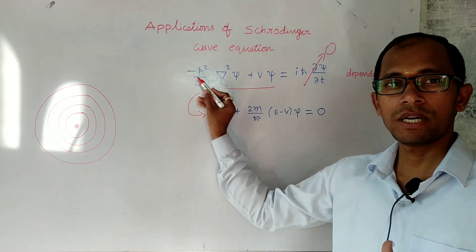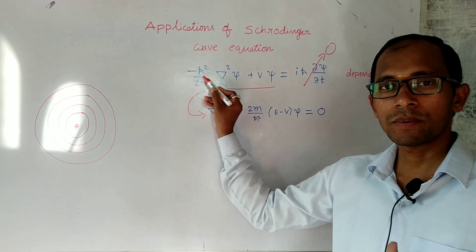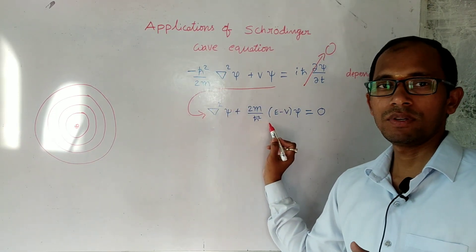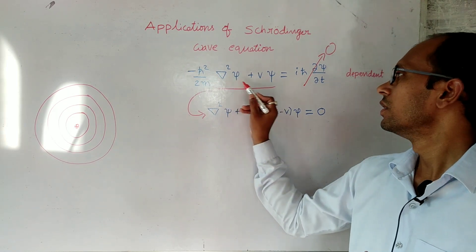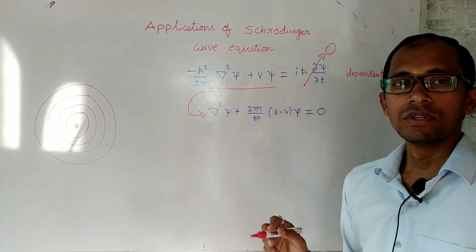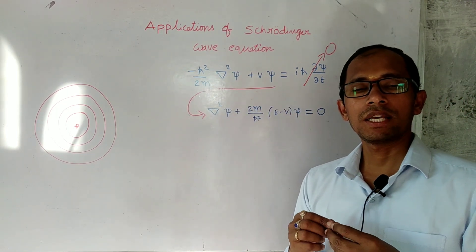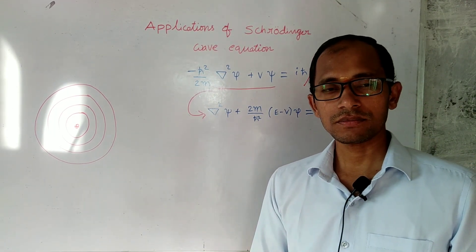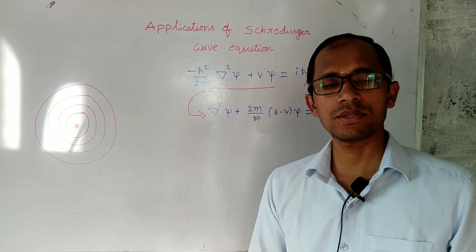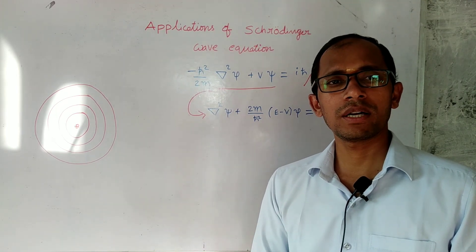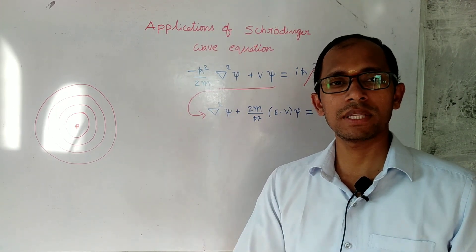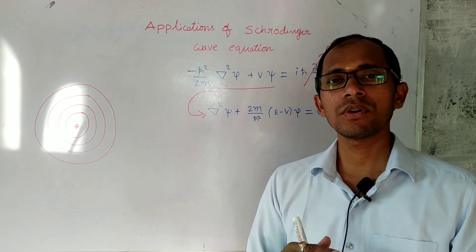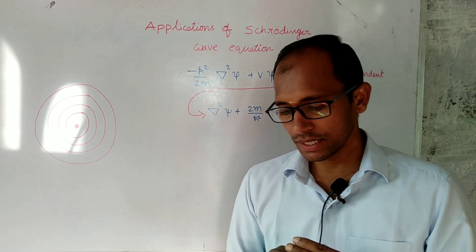So the general wave equation is the time-dependent one, and from the time-dependent wave equation we can derive the Schrödinger time-independent wave equation. This is what Schrödinger's equations are. What they give — as I mentioned — is the energy values. What are those energy values, and what is the advantage? Why should we measure the energy values? Let us see further.